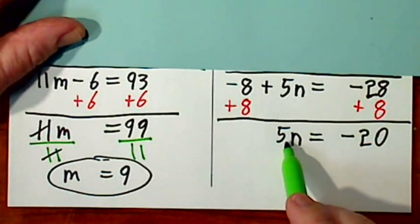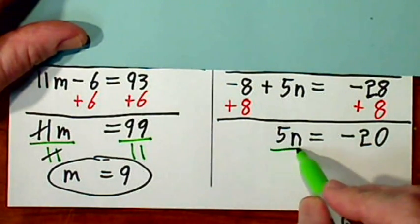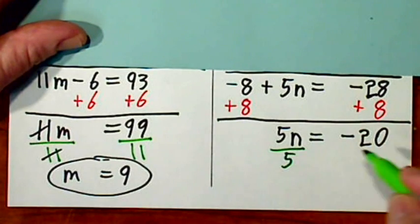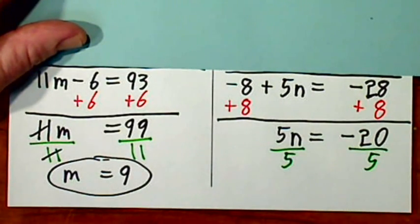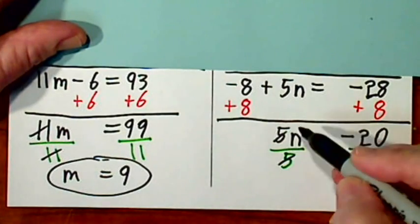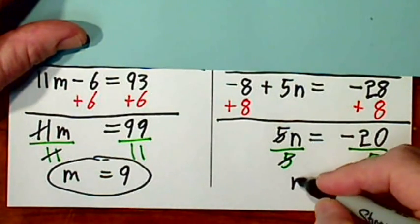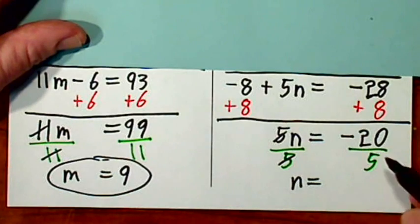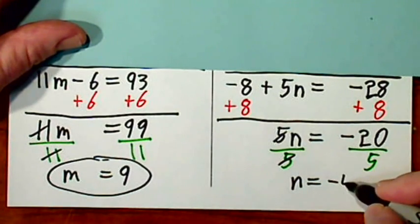One more step to get n by itself. To get rid of 5, it's held by multiplication. The opposite is division. Divide by 5 over here as well. 5 goes into 5 one time. We have n and that's negative 4.